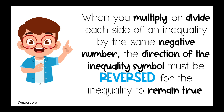All right, let's stop for a moment. When you multiply or divide each side of an inequality by the same negative number — and this only happens when you're multiplying or dividing by a negative number — you need to reverse the direction of the inequality symbol. If you're still not understanding this, don't worry, let me show you an example.